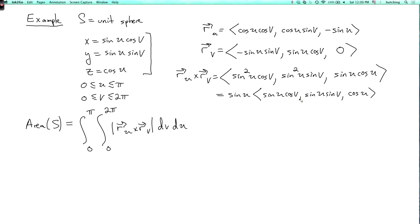Now we can simplify this a little bit by noticing that sine u factors out. So this is sine u times sine u cosine v, comma sine u sine v, comma cosine u. And we can further notice that this vector here is now just the vector x, y, z.